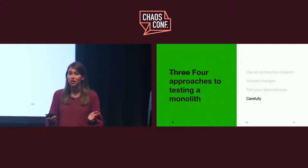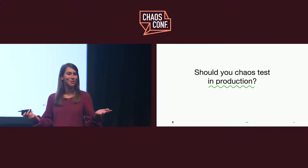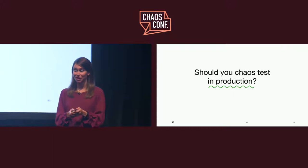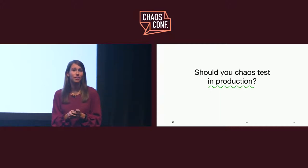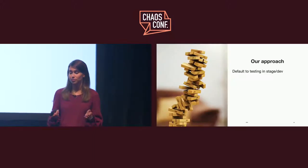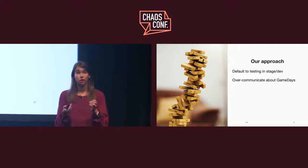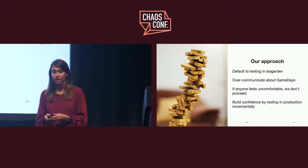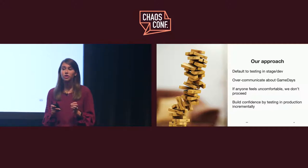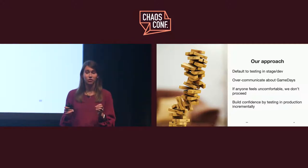How you test your monolith, or any application, is just as important as what you're testing. For us, carefully is the operative word. Should you chaos test in production? There are obviously a lot of pros and cons to testing in a production environment, but I'll share MailChimp's approach. We default to testing in a staging environment that closely resembles production. We over-communicate about our game days using Slack and our engineering calendar, making sure anyone who needs to know does before we do it. If anyone in the room isn't comfortable moving from stage to production, we'll make a note of it and we won't. And if we do run a game day in production, we are careful to start with the smallest amount of failure that can teach us something — that's called the blast radius — and then increment the magnitude of the attack slowly from there.